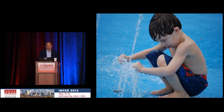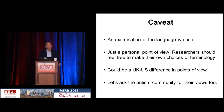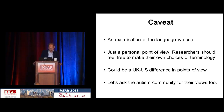One more image: again, a child not really part of his peer group, but doing something intelligent — playing with water, changing the flow of water with his hands, making patterns. I'm going to discuss the language we use to describe autism, examining the terminology we've inherited. This is a personal point of view; other researchers and professionals should be free to make their own choice. In the UK, there's a growing interest in using 'autism spectrum condition' rather than 'autism spectrum disorder.'